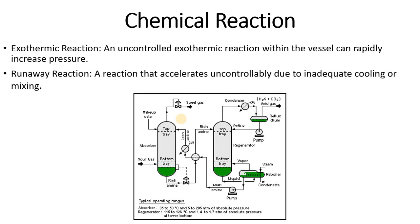Chemical reactions can also cause over-pressurization. If an exothermic reaction occurs, a large amount of heat is evolved, which can increase pressure. An uncontrolled exothermic reaction within the vessel can rapidly increase pressure. For example, in urea manufacture from liquid ammonia and CO₂, two reactions occur — first exothermic, then endothermic. If that reaction is uncontrolled and the liquid is not flowing downstream, that can cause over-pressurization.